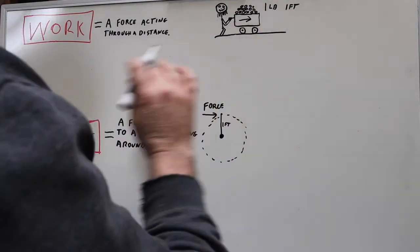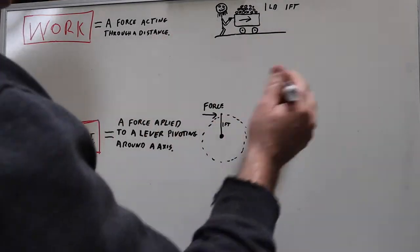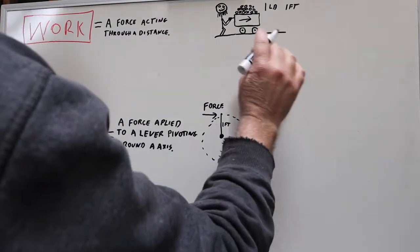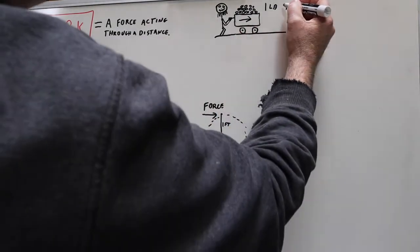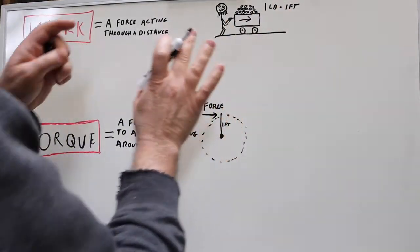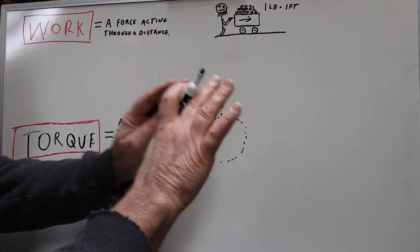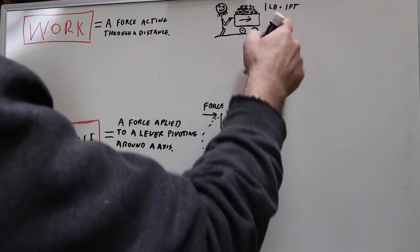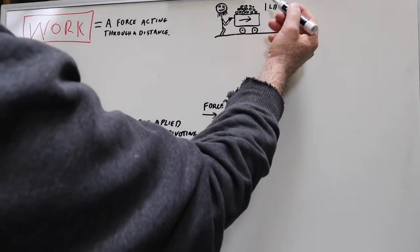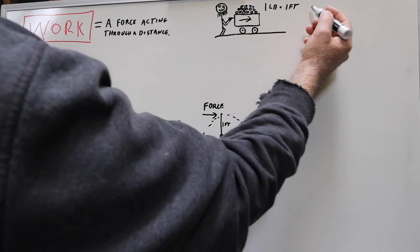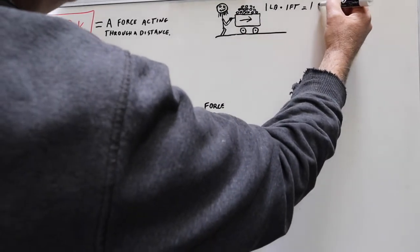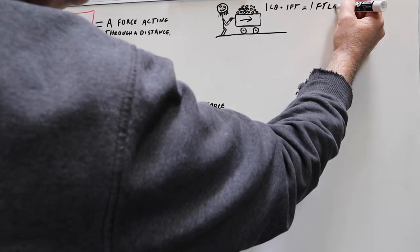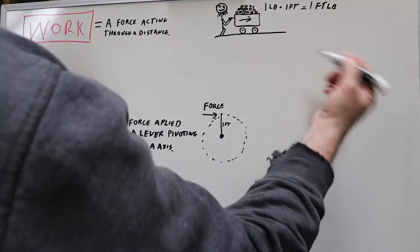One of the things we want to look at is that this is a product - this is the amount of force that is applied times the distance that the force was applied for. So if he pushes his little cart for one foot, that's one pound of force times one foot, that equals one foot-pound.